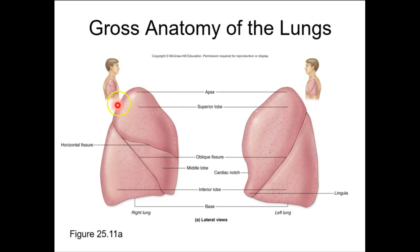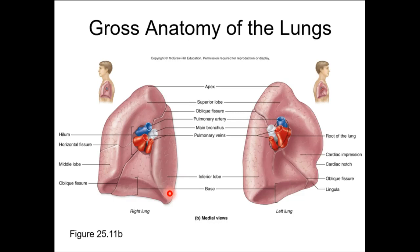You also have the apex of the lung — that's the superior surface — and the base of the lung down toward the diaphragmatic surface. This is a medial view of the left lung and a medial view of the right lung.